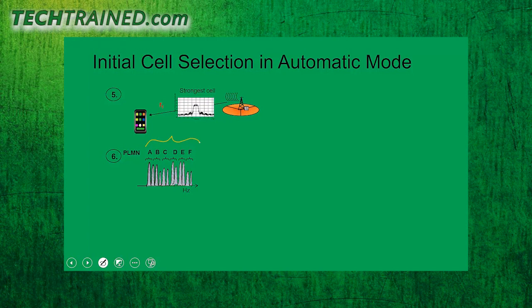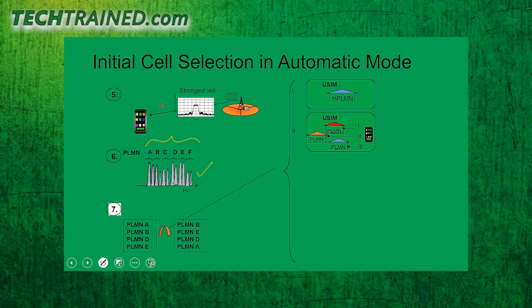The list of PLMNs is rearranged according to a certain order shown on the right side of the screen. Number one, the first priority is given to the home PLMN stored within the SIM card; if not available, an equivalent home PLMN is selected. Number two, priority is given to user selection — if you manually select a particular PLMN, that is the second priority.